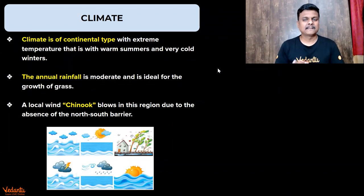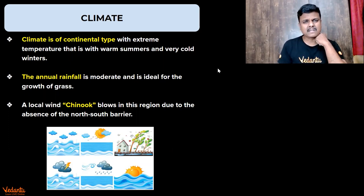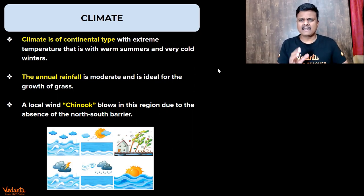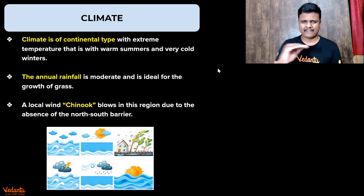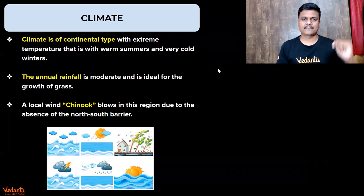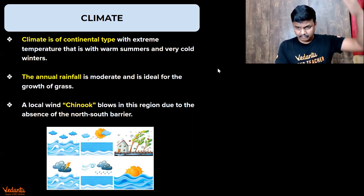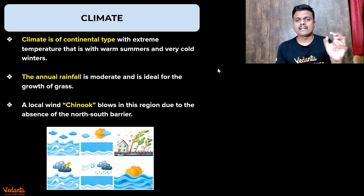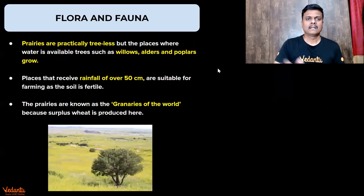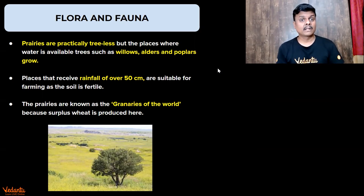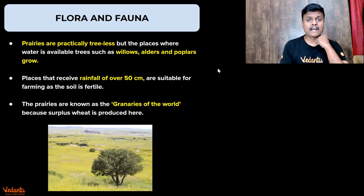Coming to the climate: it is typically extreme — that's the major difference between tropical and temperate. You will have warm summers and very cold winters. Summer will not be hot, just warm. Winters will be cold. The annual rainfall is moderate and ideal for the growth of grasses. Chinook is a local wind blowing in this region because of a north-south barrier, and it blows in the temperate region.